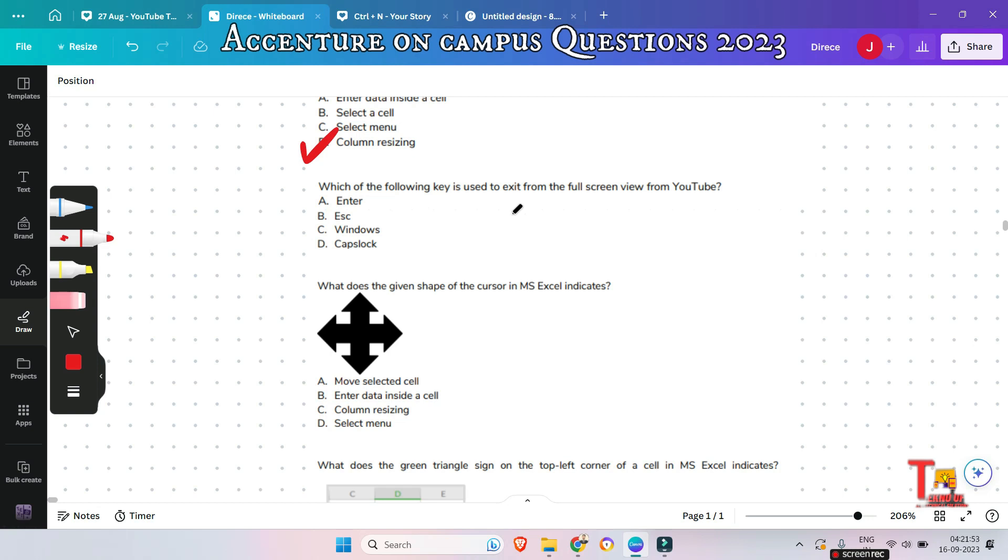Okay, the next question is, which of the following key is used to exit from the full screen view from YouTube? From any type of software, if you made it full screen, then you want to leave it. So, you have to press ESC.